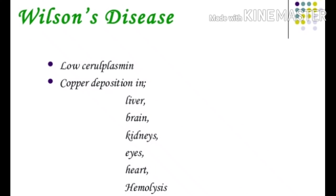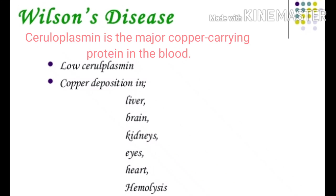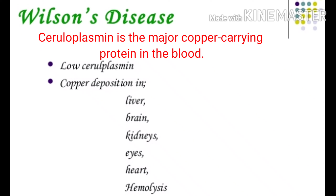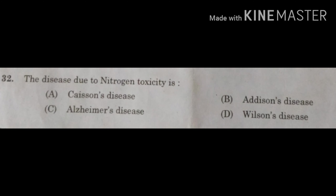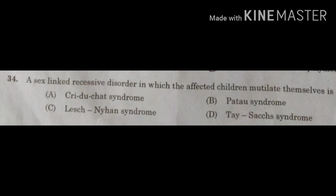Wilson's disease is also characterized by higher copper deposition in the liver, brain, kidneys, eyes, and heart, and also by a condition called hemolysis. The correct answer for this question is option A, Caisson's disease — due to nitrogen toxicity.